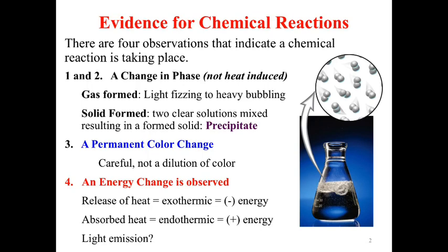If you mix two liquids and a gas shows up, to go from a liquid to a gas you typically have to heat it up. If all you did was mix two liquids, where did the energy come from to make the gas? From a chemical reaction. So if we think about those changes in phase — if they aren't things you forced to happen by supplying energy — then that energy had to come from somewhere. That's a chemical change.